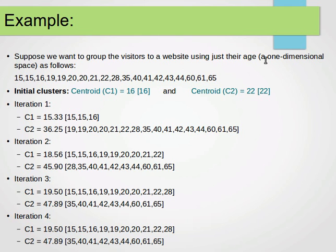Let's assume that we want to group the visitors to a website using their age—that's a one-dimensional space. Let's say we collect the age of each individual who visits the website within a certain period of time. Let's say the first visitor is age 15, the second is 15, 30, 16, and so on and so forth. Now we begin the algorithm. We need to specify k and let's say we specify k as 2. Now we want to cluster them into two clusters or two groups.